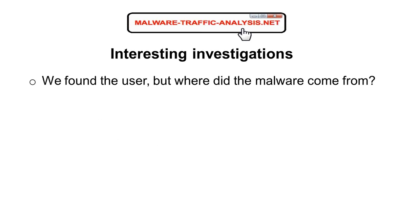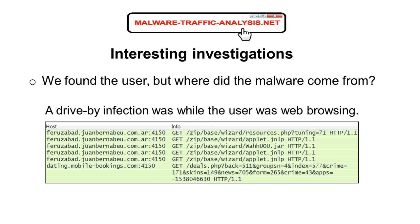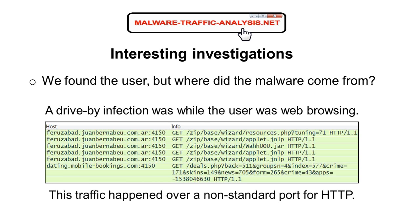We determined where the malware came from — a person was just browsing the web. What you see in that image is the actual exploit kit activity that generated the alerts. However, this traffic happened over a non-standard port for HTTP. At the time, our particular IDS would have immediately caught this if it came over port 80 or any other normal HTTP port — but it didn't, because it was on port 4150. I recognize the patterns as Sweet Orange exploit kit, sending exploits and payload over non-standard HTTP ports.